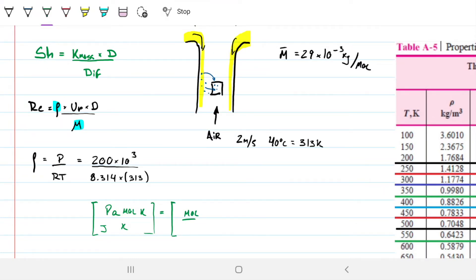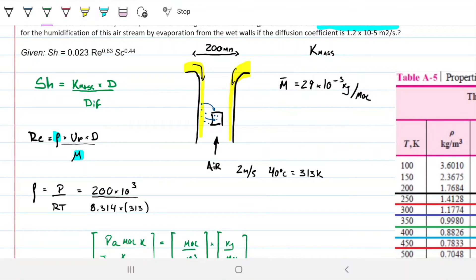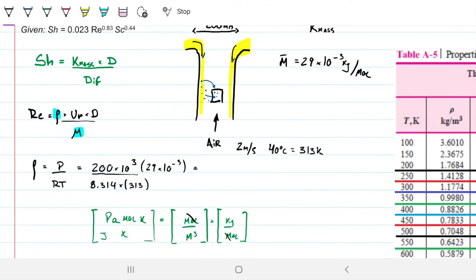If I want to have that in kilograms, then I need to multiply by a property that is kilograms per mol, which we do have. That's the molecular weight. So I'm going to multiply this by 29 times 10 to the minus 3, so that I can get my answer in kilograms per meters cubed. We're left with 2.228, and we're going to go ahead and do 2.23 kilograms per meters cubed.